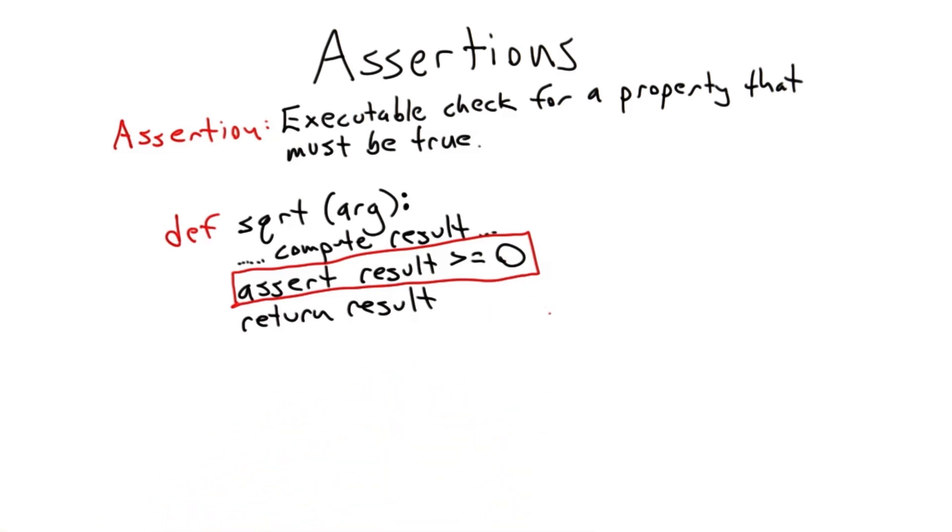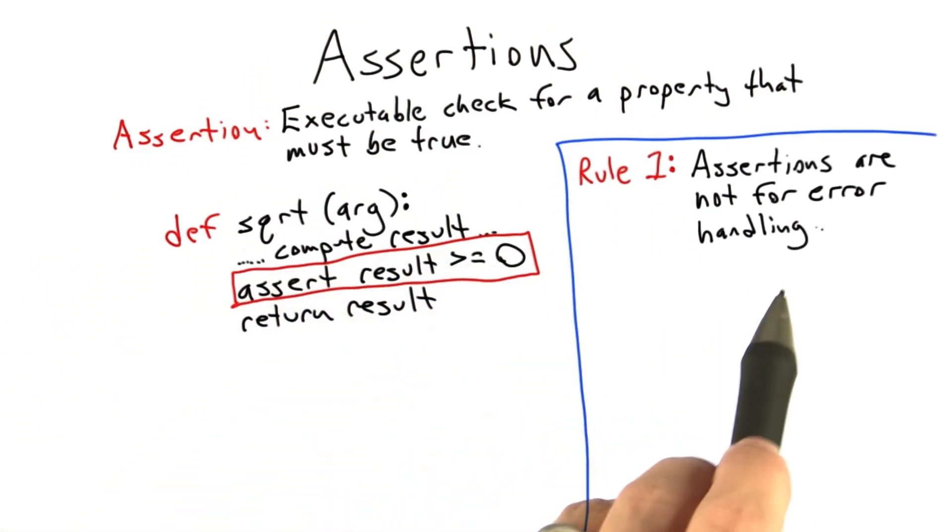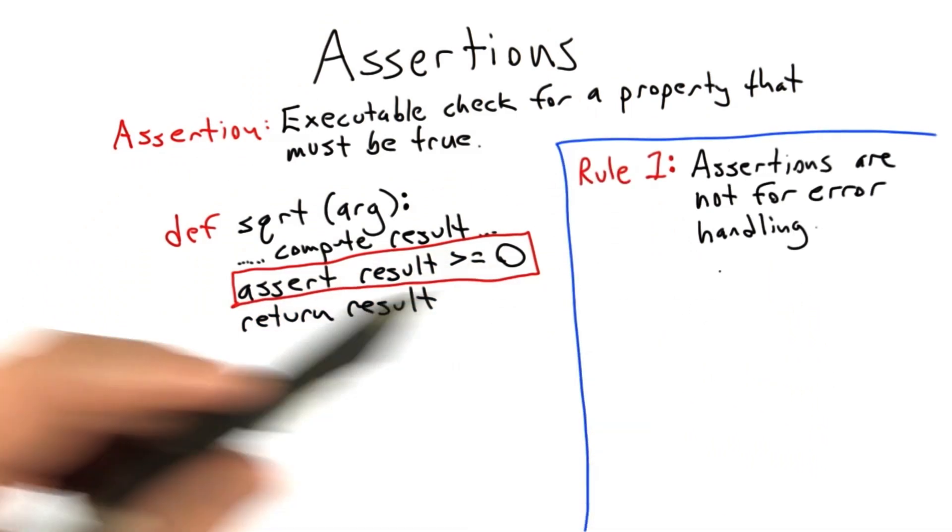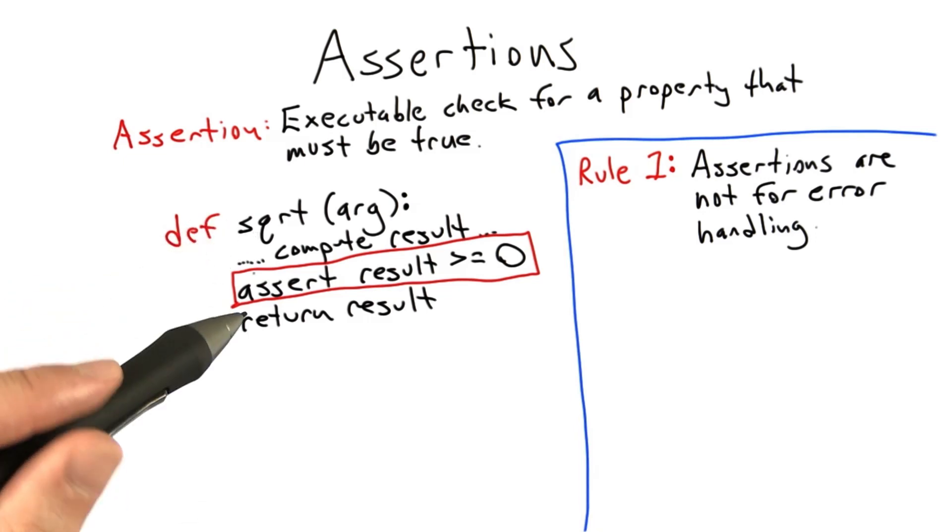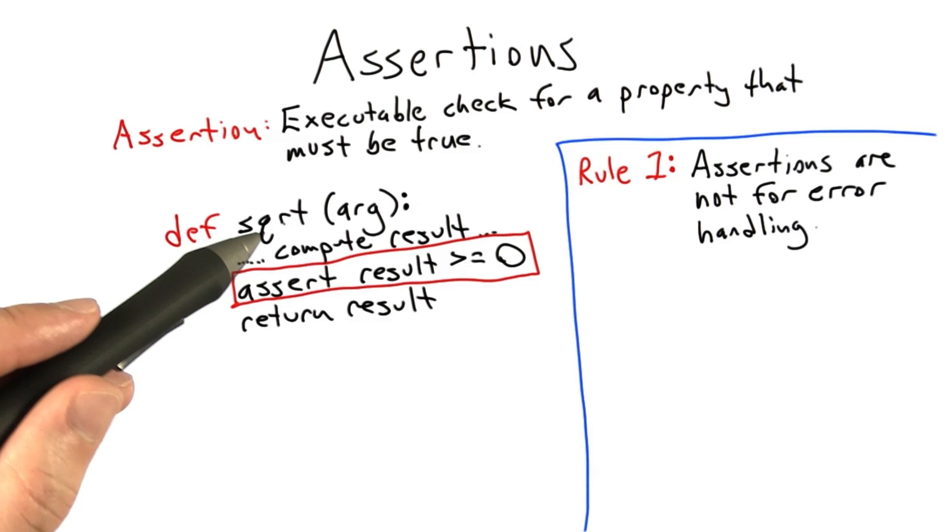So let's look at some basic guidelines for putting assertions into code. The first rule is that assertions are not for error handling. So for example, it would have been a mistake at the beginning of this routine, probably, to assert that arg was greater than or equal to 0. That would reflect a condition that we want to handle with an exception, that is to say, with Python's established error handling mechanism, and not with an assertion.